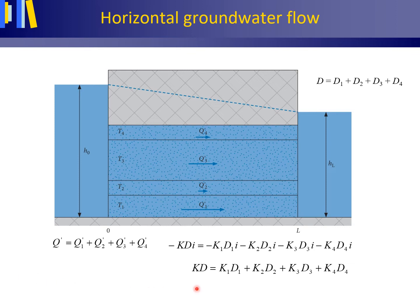As we know the values of K1, 2, 3, and 4, D1, 2, 3, and 4, and the sum D, we may derive the hydraulic conductivity for the aquifer as a whole, K, from this equation. This K without a subscript is called the substitute hydraulic conductivity. It is the hydraulic conductivity, in meters per day, that we can assign to the aquifer when dealing with the aquifer as one entity instead of four separate layers.